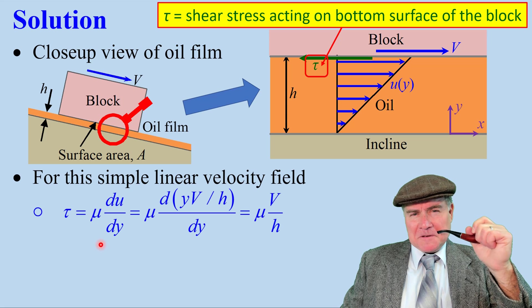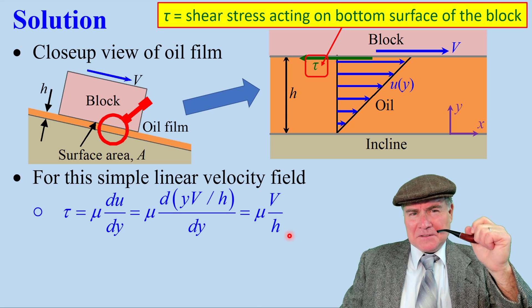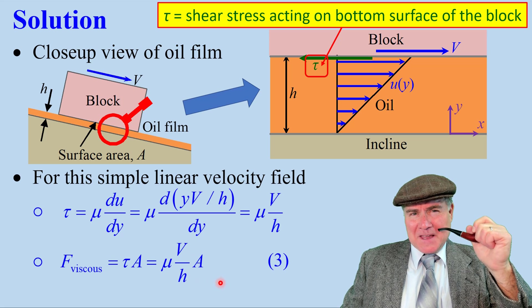For this simple linear velocity field, tau is mu du dy, which simplifies to mu v over h. And the viscous force is just tau times A, or mu v over h times A.